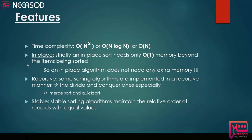A sorting algorithm can be in-place, which means that strictly an in-place sort needs only O(1) memory beyond the items being sorted — so it doesn't need any extra memory. We are able to make the sorting operations locally without any additional memory. Sorting algorithms can also be recursive and non-recursive; especially the divide and conquer ones such as merge sort and quicksort are implemented recursively. And a sorting algorithm can be stable or not stable.